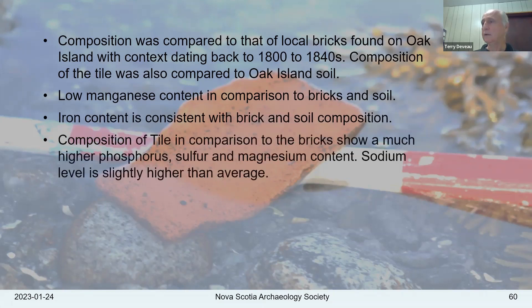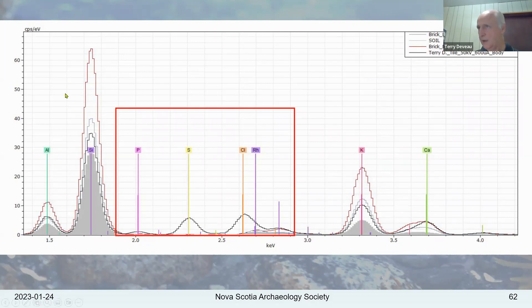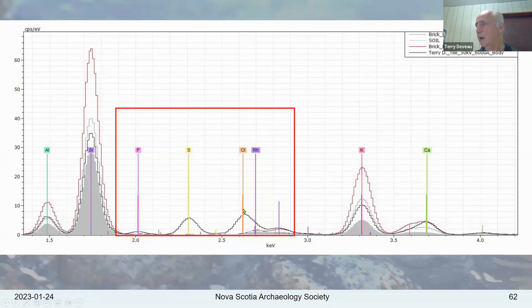Here's some of that information in graphical format where the potassium line is highlighted and the chlorine is coming from the salt water. The brick is one color, my ceramic tile is the blue line, and the soil is I think the lower one. There are some similarities and some differences — basically the lumps in the tile's color line are not present in the other lines.